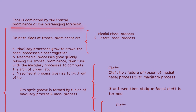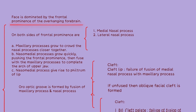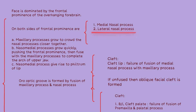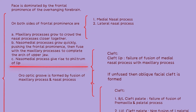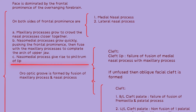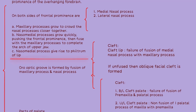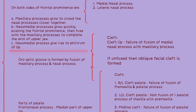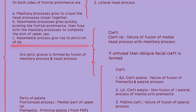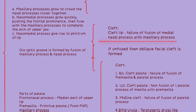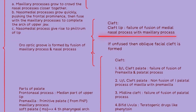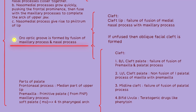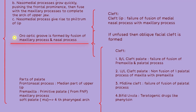The face is dominated by the frontal prominence, which arises from the overhanging forebrain. On both sides of the frontal prominence, there are medial nasal processes and lateral nasal processes. Maxillary processes grow and crowd the nasal processes closer together. The nasomedial processes grow quickly and fuse with the maxillary processes to complete the arch of the upper jaw, giving rise to the philtrum of the upper lip. Failure of fusion of the medial nasal processes with the maxillary processes can lead to cleft lip. The fusion of the maxillary processes and nasal processes forms the oro-optic groove.